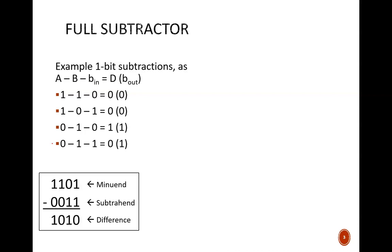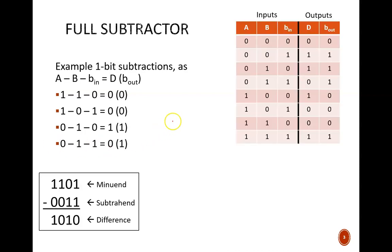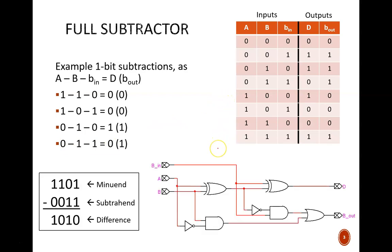To design a circuit to accomplish this, a truth table is made to summarize all 8 of the possible subtractions. Then, this circuit is made to replicate the truth table. This is called a full subtractor. That term full is used to indicate that it can handle the borrow bit. Note the similarity to a full adder and its use of a carry bit.